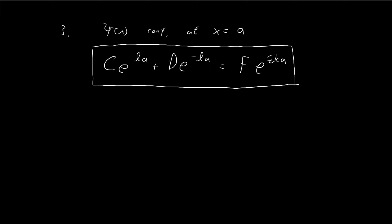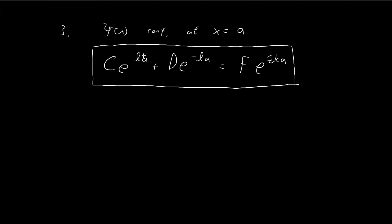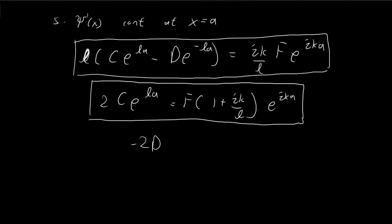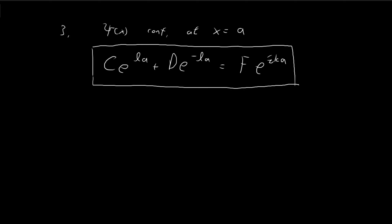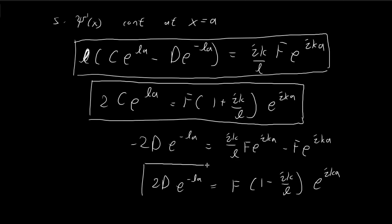Instead of adding, we subtract the ξ'(x) expression from the ξ(x) continuity expression at x = a. The c terms cancel, leaving negative 2d·e^(-la) on the left-hand side. On the right-hand side, we get f times (1 - ik/l) e^(ika) after rearranging. This is another expression that will be useful later on.